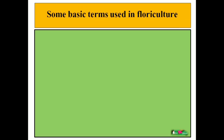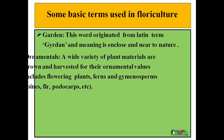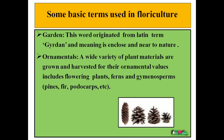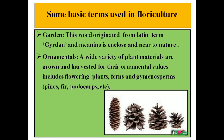From this slide, we are going to understand basic terminologies mostly used in floriculture. The first term is garden — this word originated from the Latin term 'giardin', meaning enclosed and near to nature. A garden is where we grow flowering plants or other plants which look beautiful on a piece of land near the home, offices, or ground. Next is ornamentals — a wide variety of plants grown for their ornamental values. The first important use of ornamental plants is decorative purpose; we cannot say apple is an ornamental plant as it is basically a fruit crop.